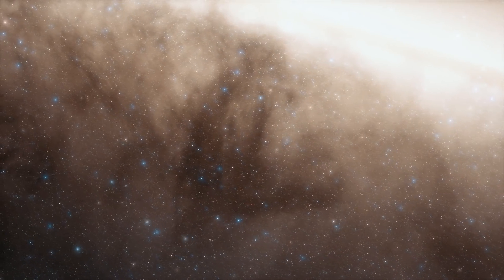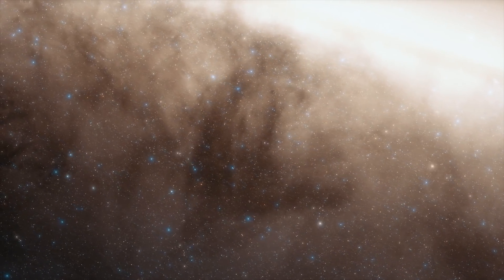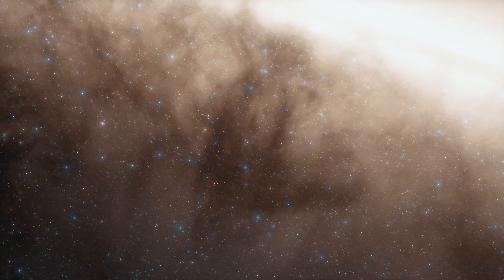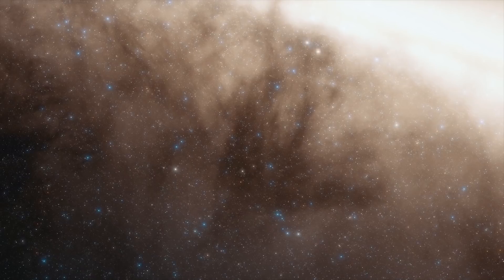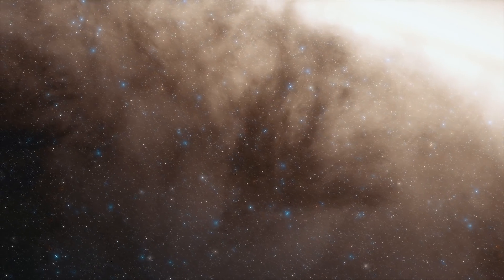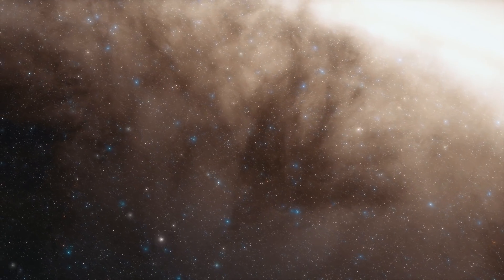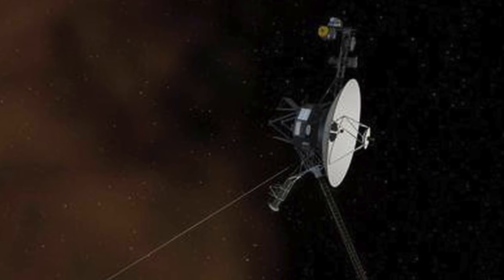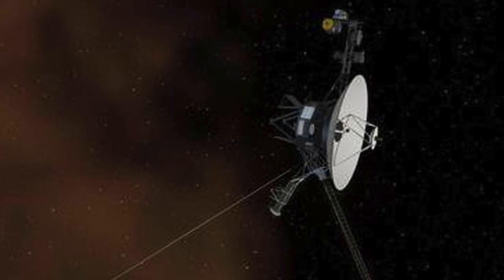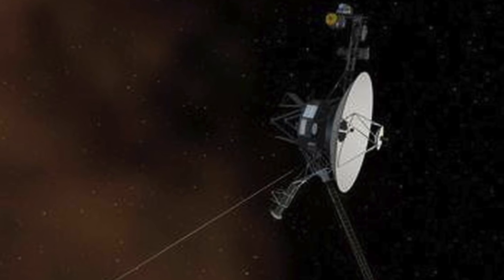Scientists said that once the probe passed through this region of space it started to detect the noises. Senior author James Cordes said the following: The interstellar medium is like a quiet or gentle rain. In the case of a solar outburst, it's like detecting a lightning burst in a thunderstorm, and then it goes back to a gentle rain.